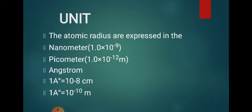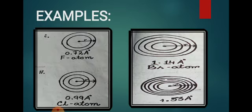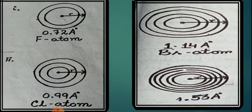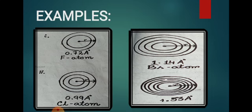The unit of atomic radii can be expressed in nanometer (nm, equal to 10⁻⁹ m), picometer (pm, equal to 10⁻¹² m), or angstrom (Å, equal to 10⁻⁸ cm or 10⁻¹⁰ m). Angstrom is the most commonly used unit. For example, iodine has an atomic radius of 1.53 angstroms.